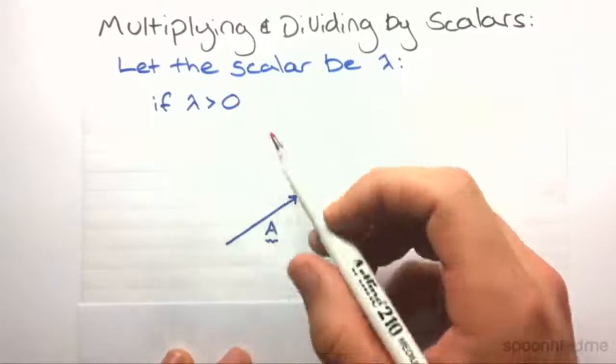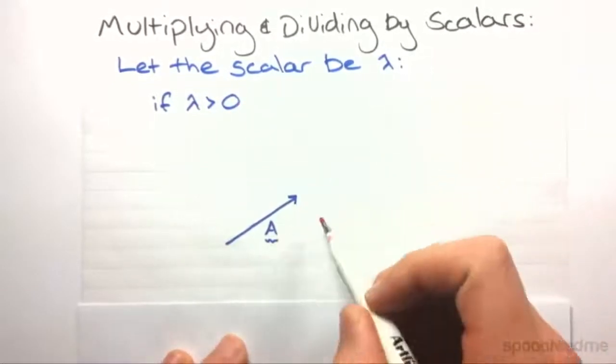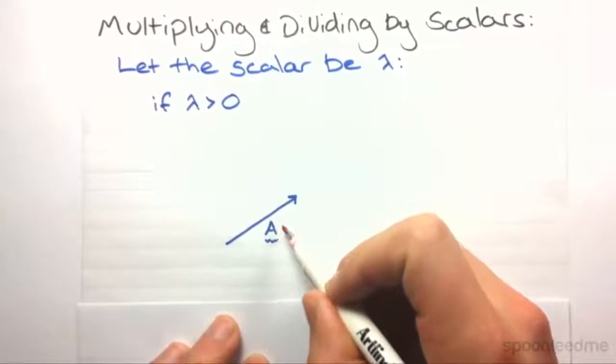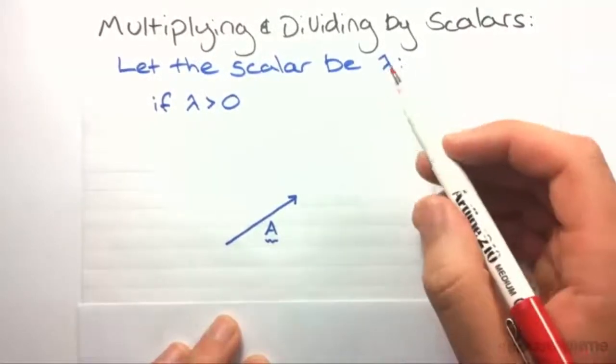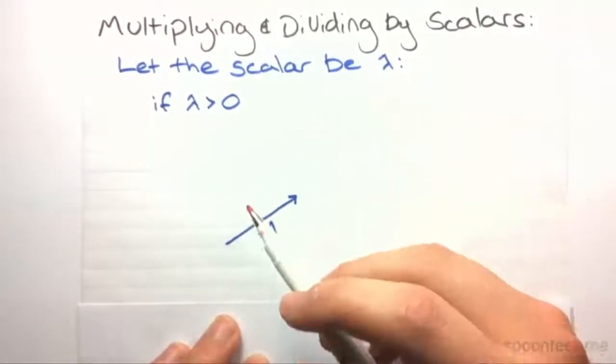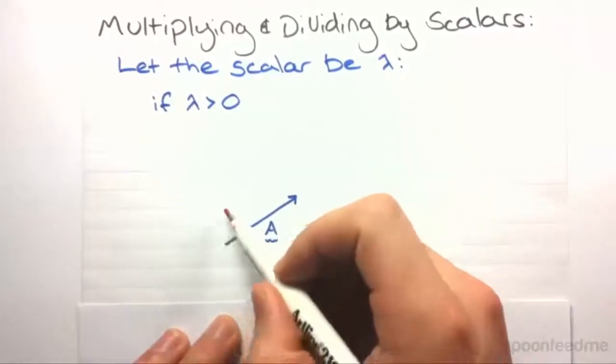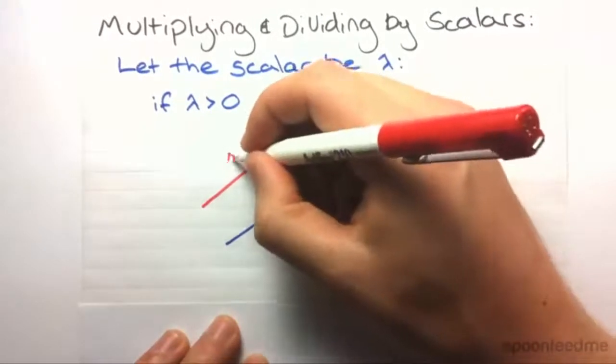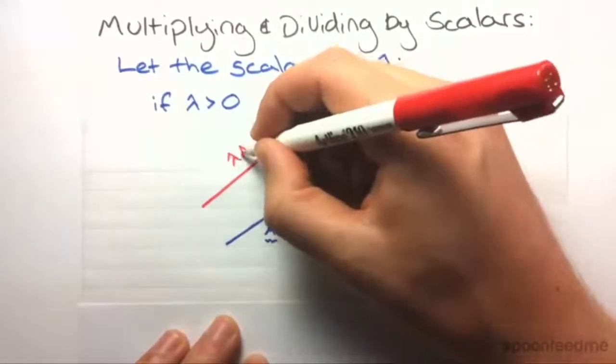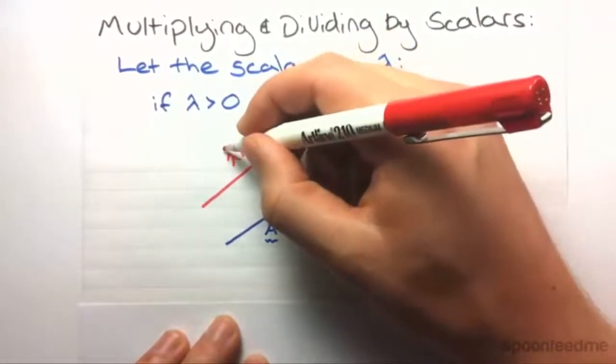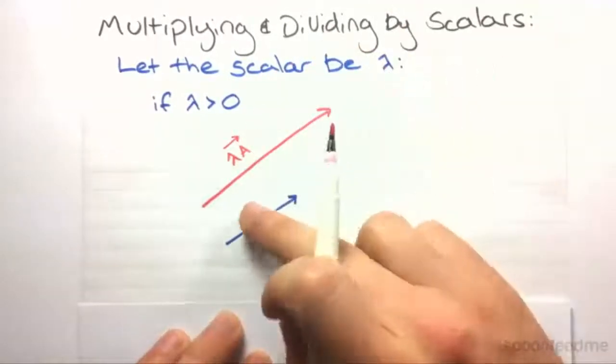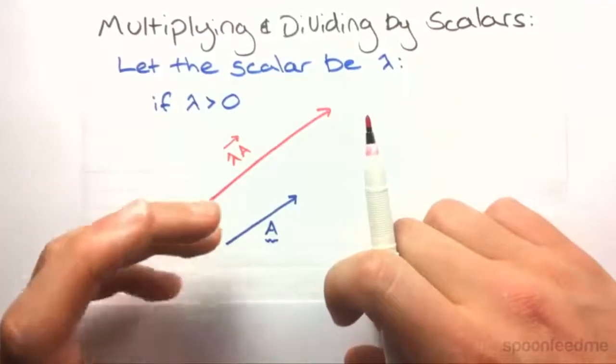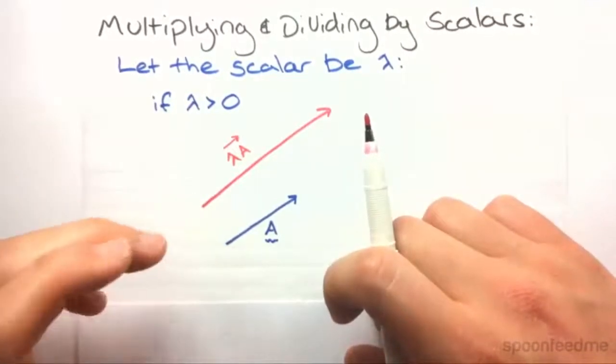And we're going to say first, if lambda is greater than zero, what happens to A? Well what happens to A, is instead of just having a magnitude of A, the magnitude is multiplied by lambda. The direction doesn't change at all. So you end up with a new vector, same direction, only difference now is the magnitude has changed. And it's now lambda A. So when we multiply or divide by scalars, we just change the magnitude. We just multiply or divide the magnitude.